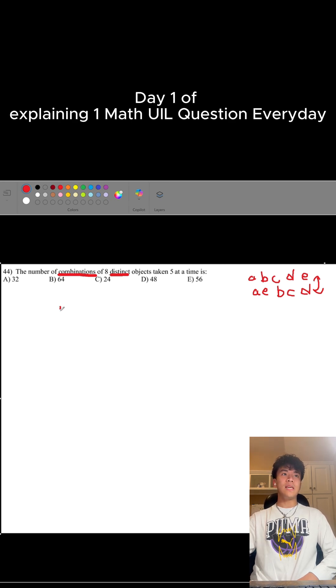You can use C(8,5). So 8 here refers to the total amount of objects you have, and 5 refers to the amount you're actually taking.